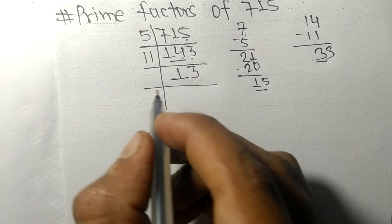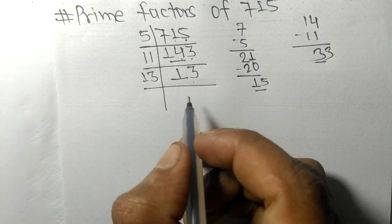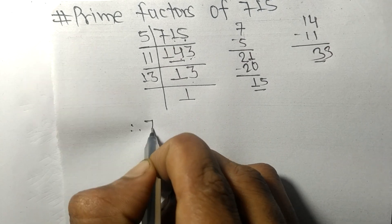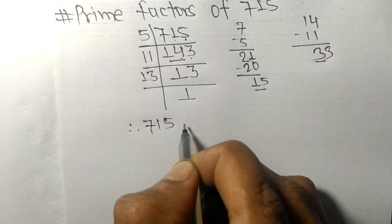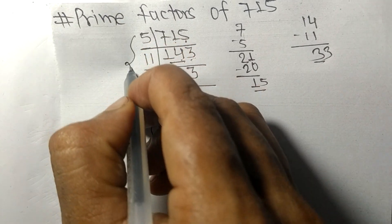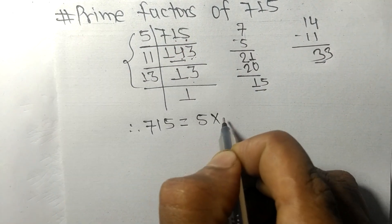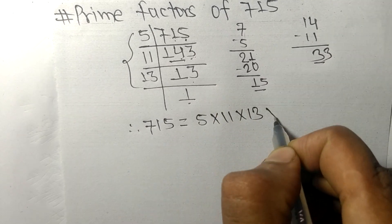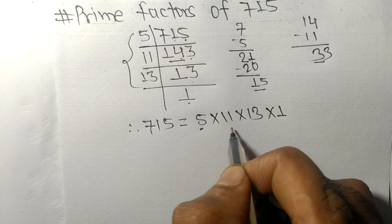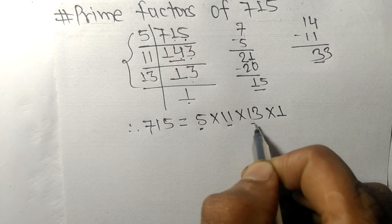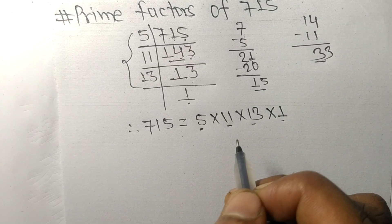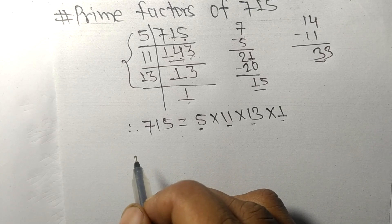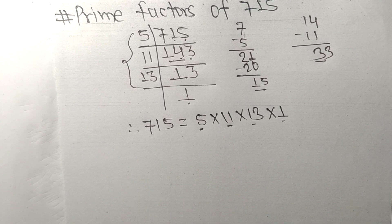Since 13 is a prime number, it is divisible by 13 only, and on dividing we get 1. Therefore 715 equals 5 times 11 times 13. So 5, 11, and 13 are the prime factors of 715. Thanks for watching.